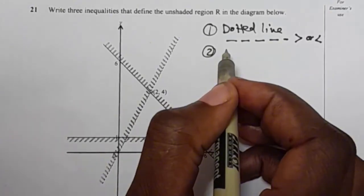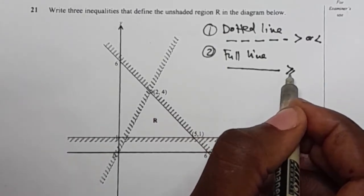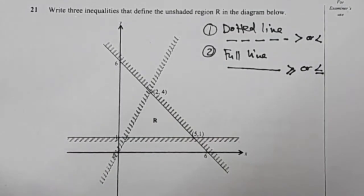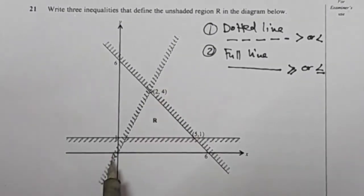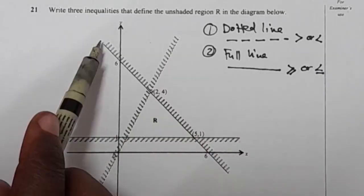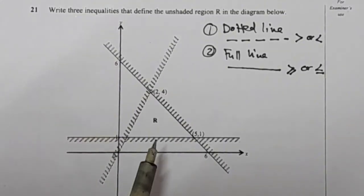Number two: when you have a full line, it means your inequality is going to have a greater than or equal to symbol, or a less than or equal to symbol. With that in mind, we can go ahead and find the inequalities. The first thing you are supposed to do is look for the line with the easiest equation. Lines crossing both axes will require formulas, but this line is only crossing the y-axis.